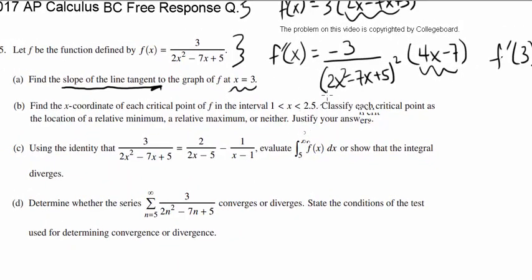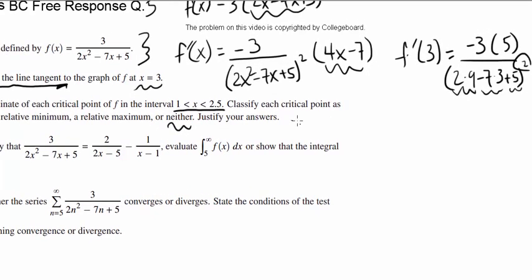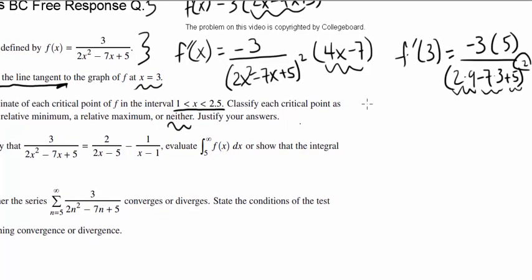Now let's look at part B. Find the x-coordinate of each critical point of f in the interval 1 to 2.5. Classify each critical point as the location of relative minimum, maximum, or neither. Justify your answers. So we want to find all the critical points, which are the values where f prime of x is 0 or undefined.